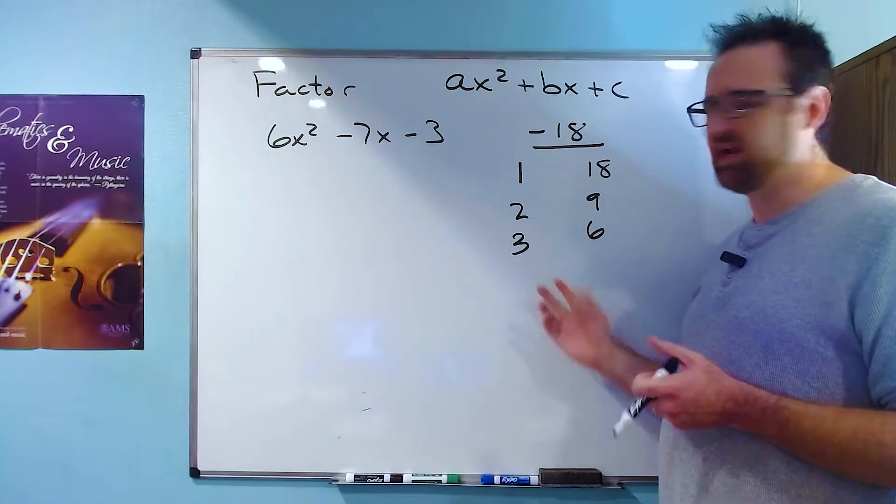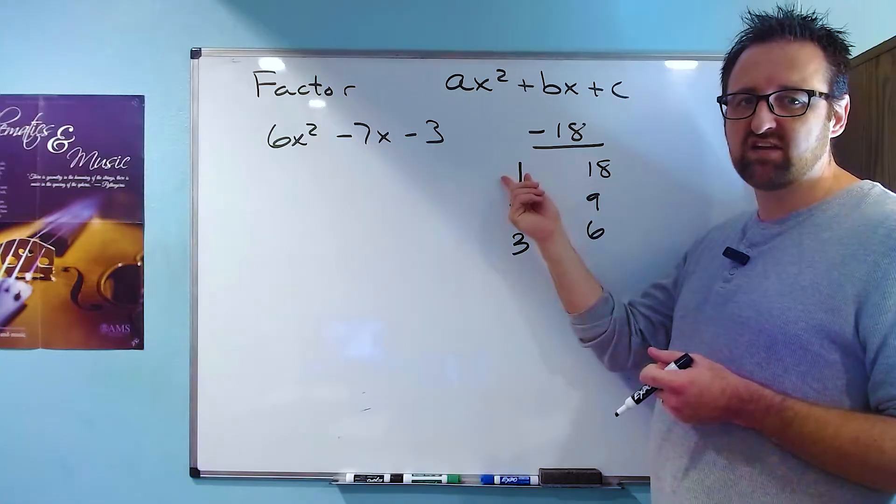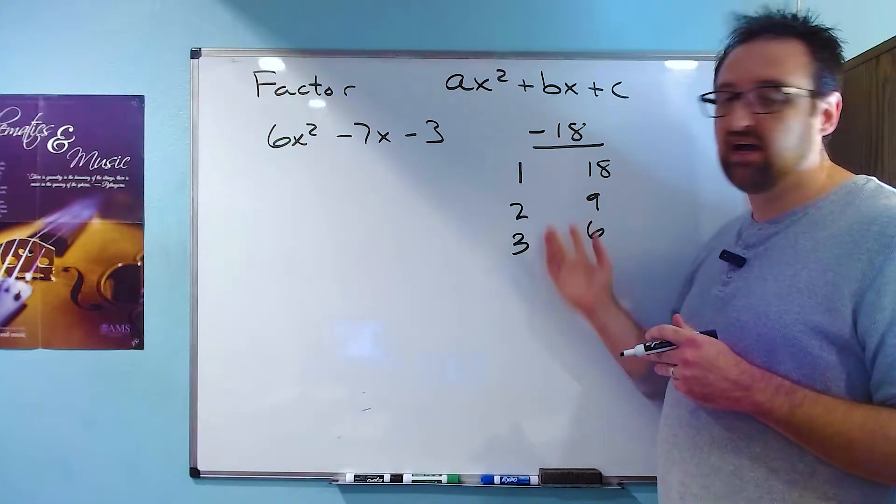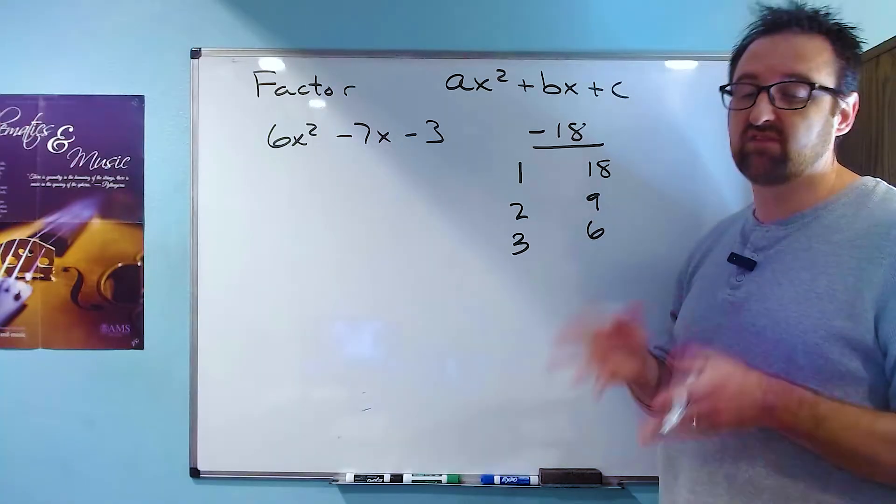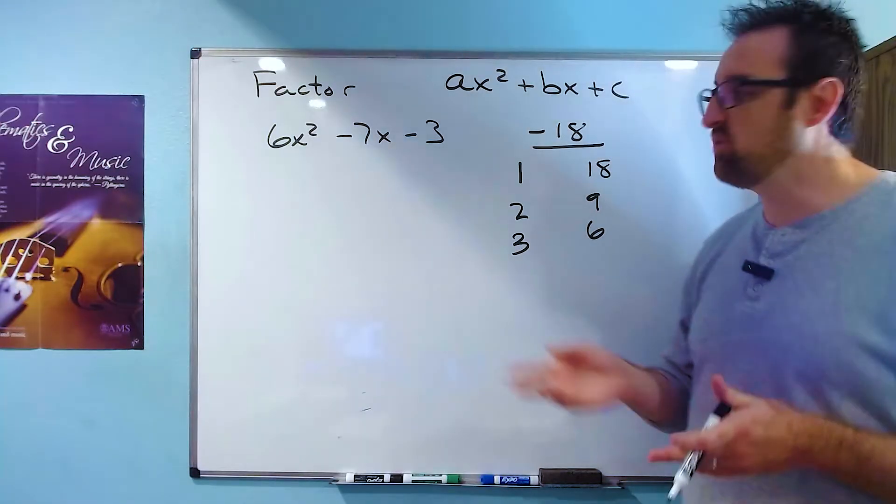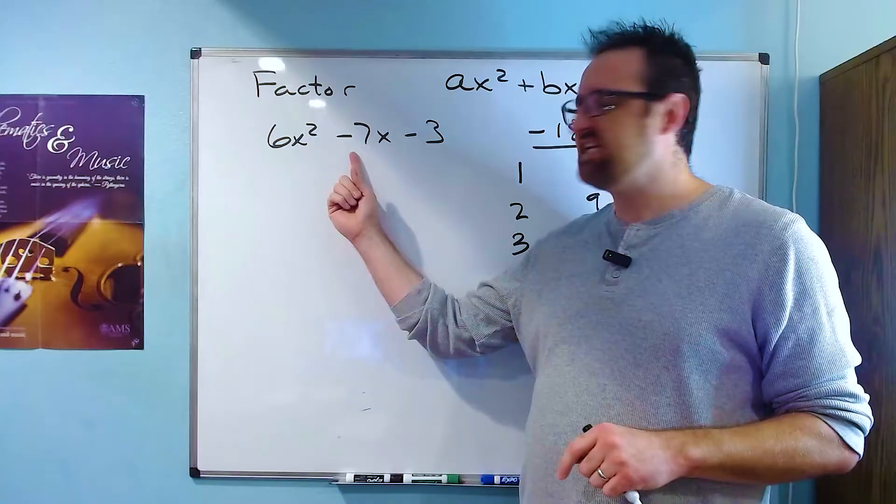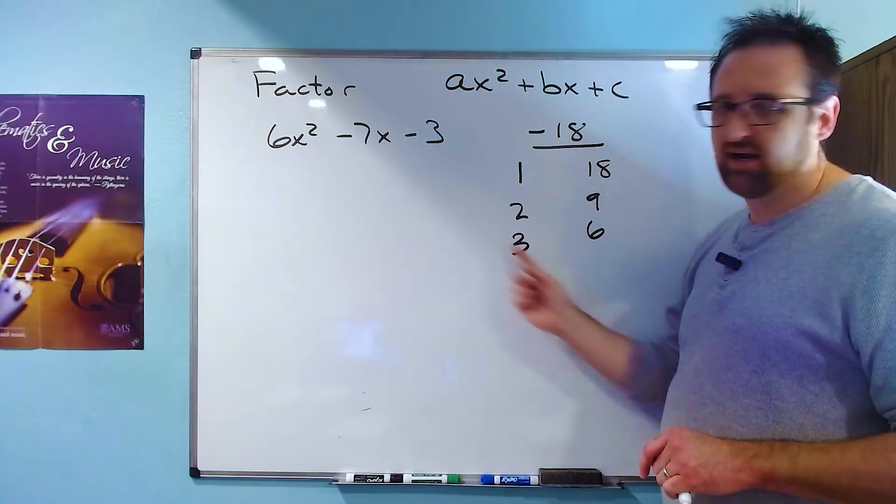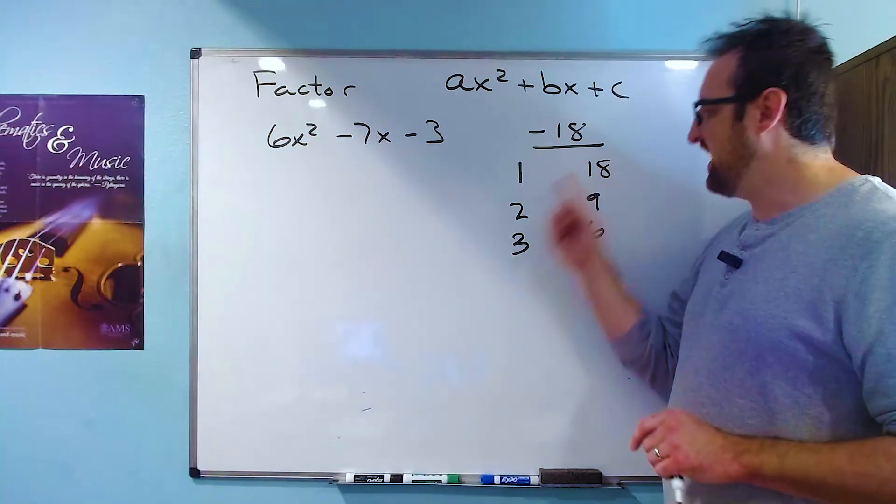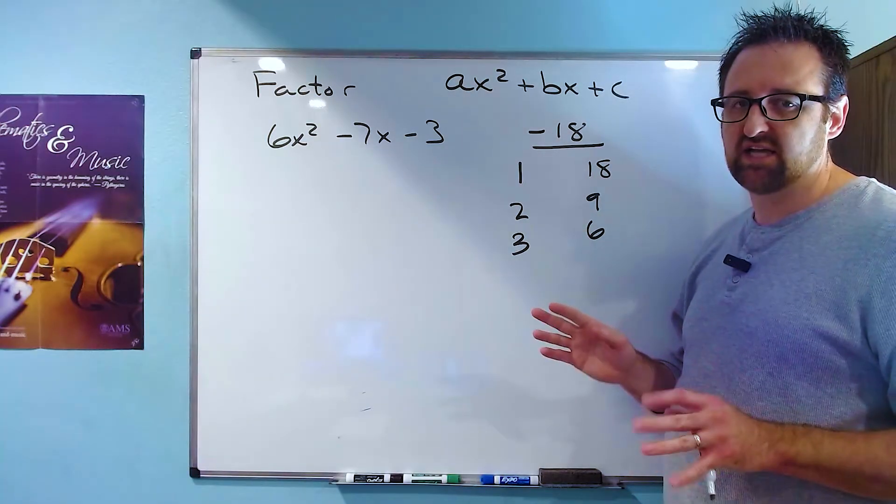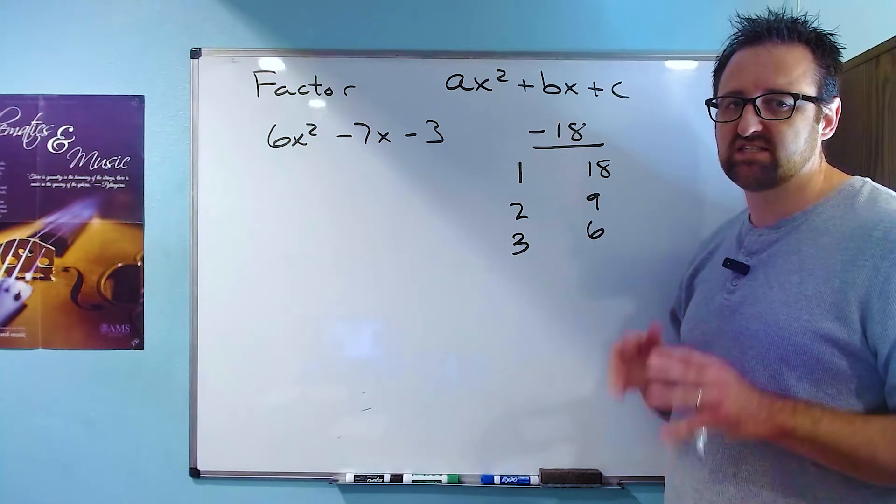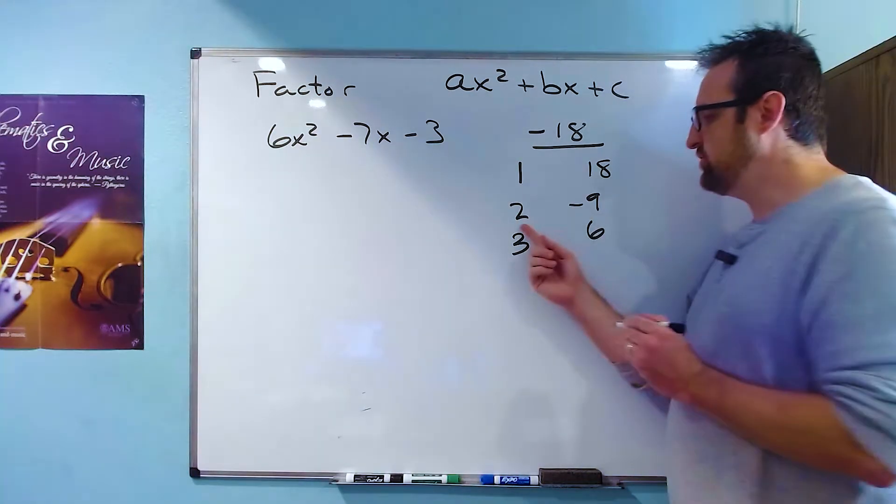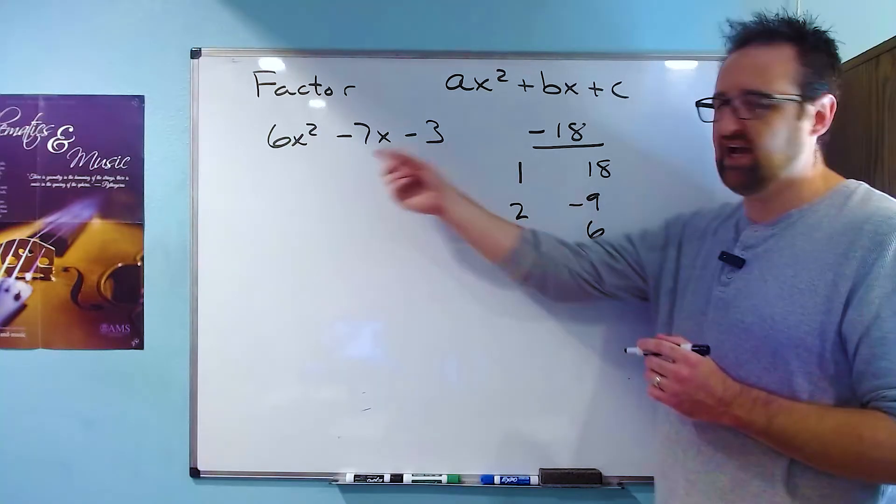Now here's where the sign comes in because we don't actually want to get 18. We want to get negative 18 out of this. And that means that the numbers here have to have opposite signs in order to produce a negative product. So one of these has to be positive and one of them has to be negative. And I don't know which one. So that actually kind of doubles the number that I have here because I could have negative one in 18 or one in negative 18. But ultimately, all I have to do is find one of these pairs and they have to have opposite signs. And what I'm looking for is the pair of numbers that adds to negative seven. Make sure you include the sign. Looking over here and keeping in mind that each of these factor pairs have to have opposite signs. Can you see which one adds to negative seven?